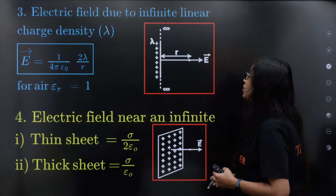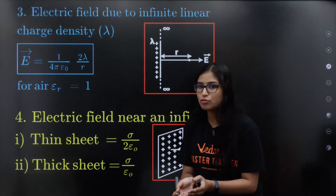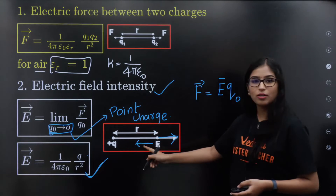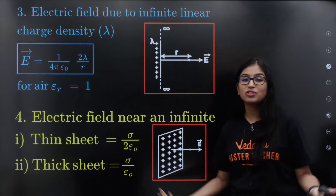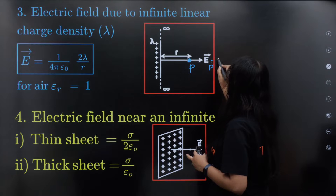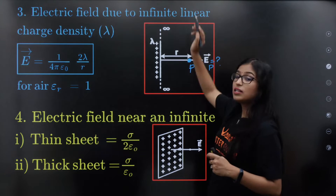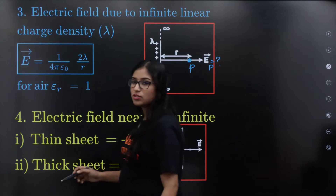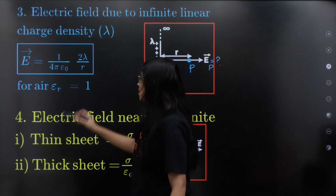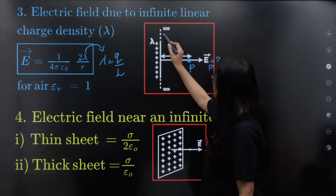Next: electric field due to an infinite linear charge density — this means continuous charge distribution. For a straight conductor with large charge, E is equal to 1 by 4π epsilon₀ into 2λ divided by R. Lambda is equal to q divided by L, where L is the length of the conductor.